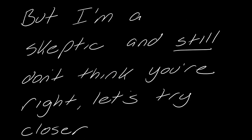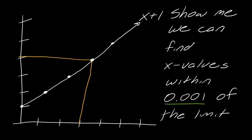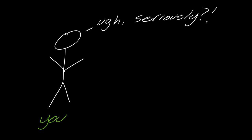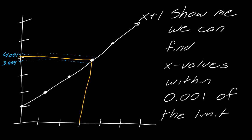But I'm a skeptic and I still don't think you're right — let's try closer. Maybe something weird happens at a microscopic level at 0.01. So let's go down to 0.001 of the limit. And you're like, seriously? But you do it, because you're a nice person. So we get within a tighter region around that limit.